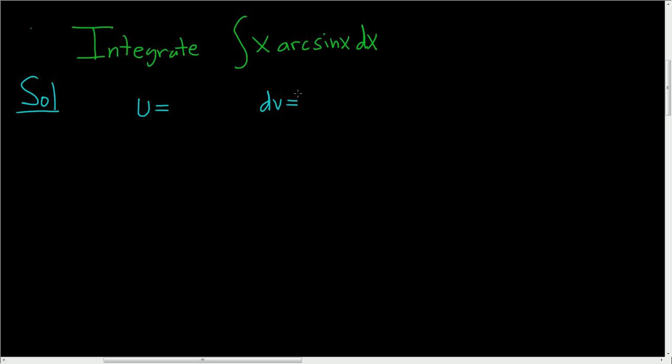and dv has to be something that's easy to integrate. So we definitely don't want to pick dv to be the arcsine, so we'll let u be arcsine. And then dv will simply be what's left over, so x dx.